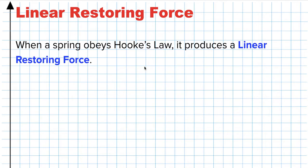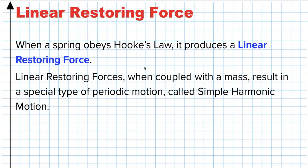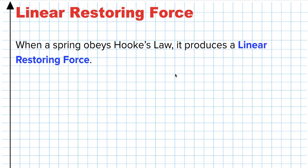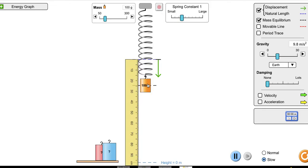A linear restoring force is just a fancy way to say: when something is moved — imagine an object attached to a spring — if I pull it to the left, the spring tries to pull back to the right. If I pull to the right, the spring pushes to the left. The spring tries to keep whatever mass is on it at a certain location called its equilibrium.